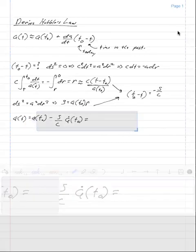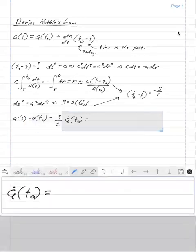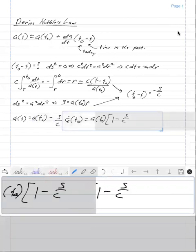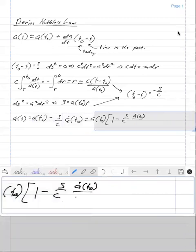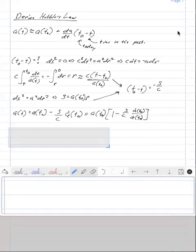I'm just going to do a little bit of algebra. I'm going to pull out the a of t naught times one minus s over c, and we have a dot today divided by a of today.